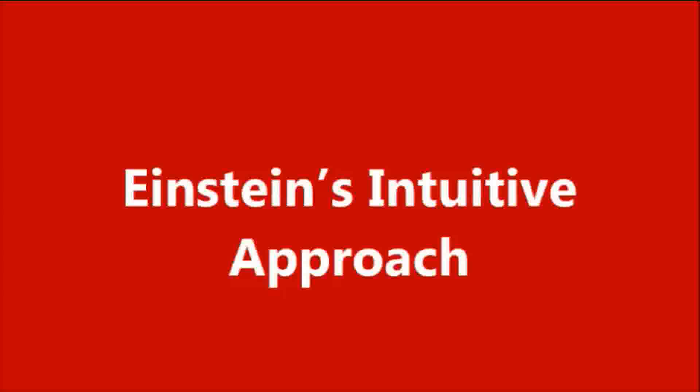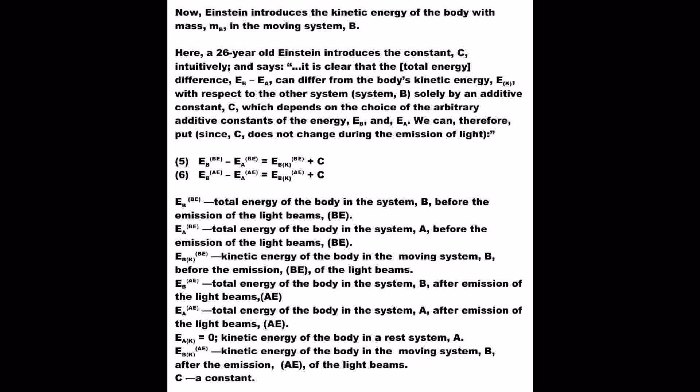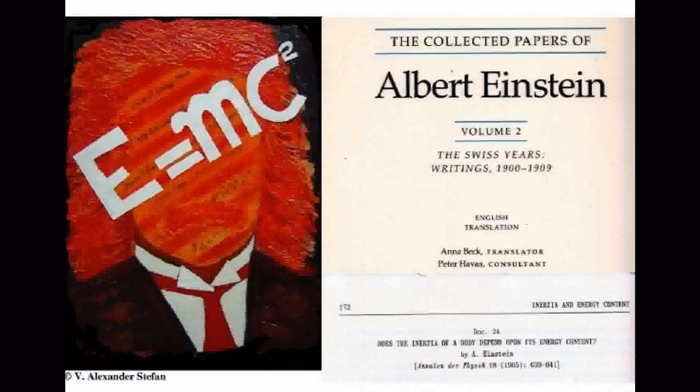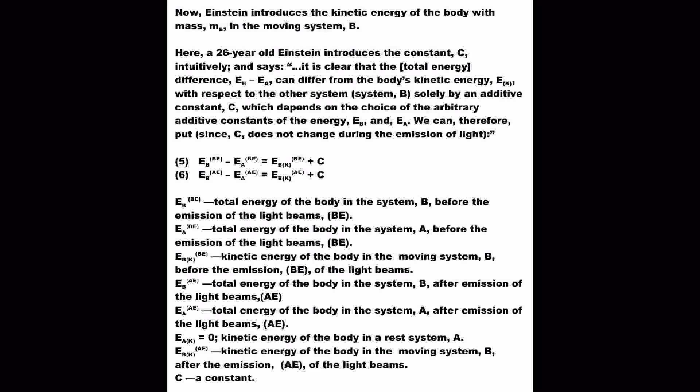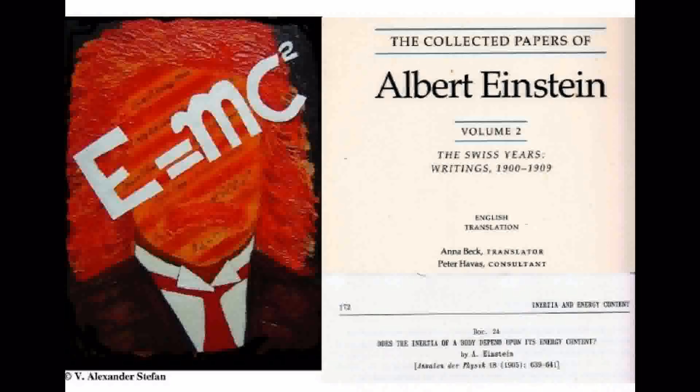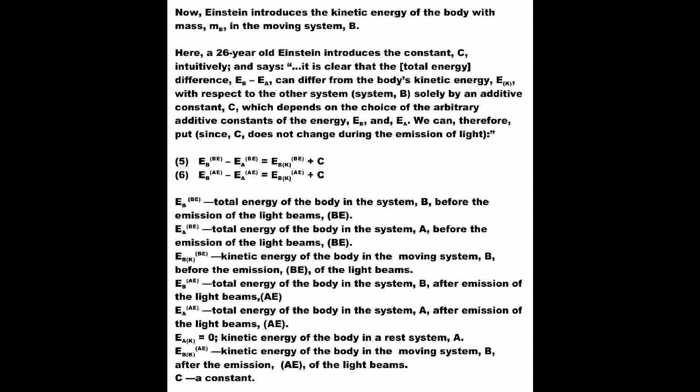Einstein's intuitive approach. Einstein introduces the kinetic energy of the body with mass M_B in the moving system B. Here, a 26-year-old Einstein introduces the constant C intuitively, and says: it is clear that the total energy difference E_B minus E_A can differ from the body's kinetic energy E_K with respect to system B solely by an additive constant C, which depends on the choice of the arbitrary additive constants of the energies E_B and E_A. We can, therefore, put, since C does not change during the emission of light.